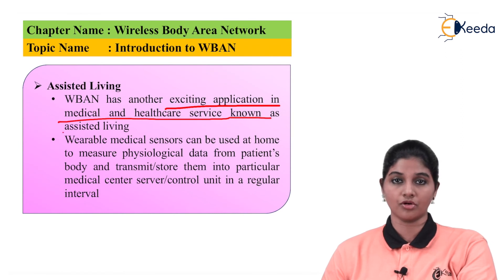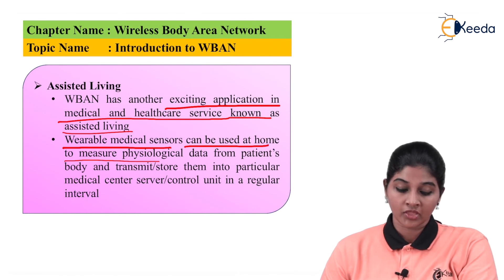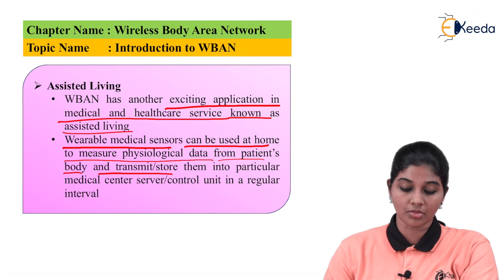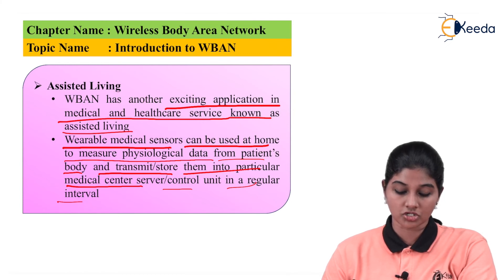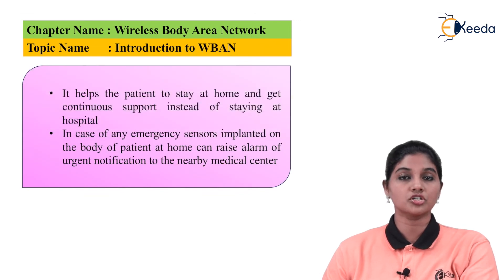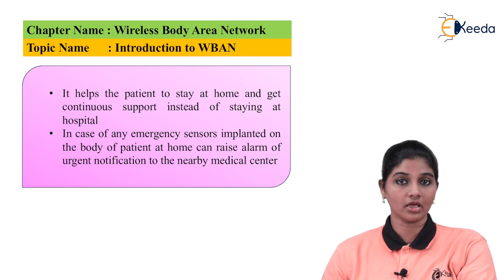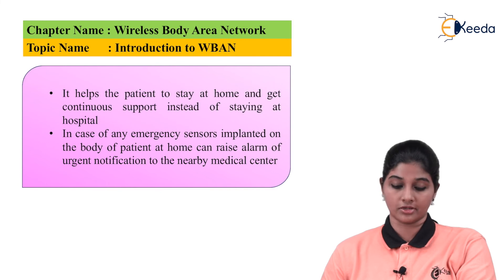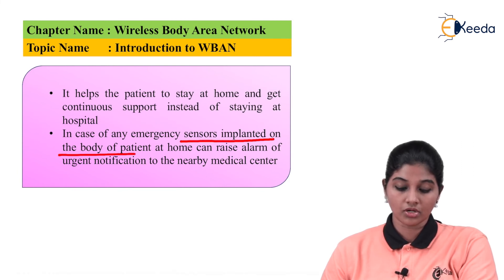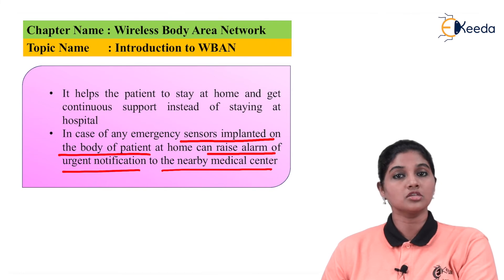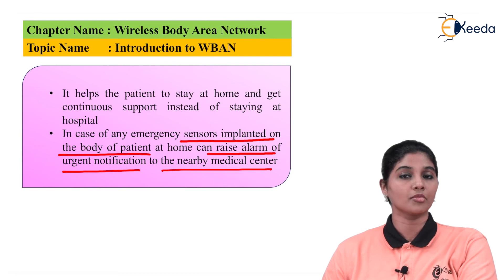The next application is assisted living. Wireless body area network has another exciting application in medical and health sector services known as assisted living. Wearable medical sensors can be used at home to measure the psychological data of the patient's body and transmit or store them in a medical central server on regular intervals. This allows doctors to continuously monitor patient health and suggest required lifestyle changes. In case of any emergency, sensors implanted on the patient's body at home can raise an alarm or notification to the nearby medical center.